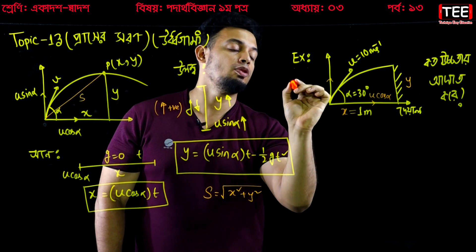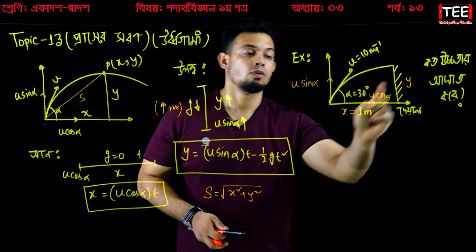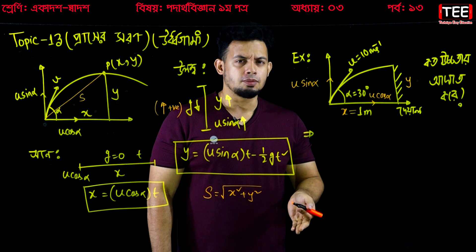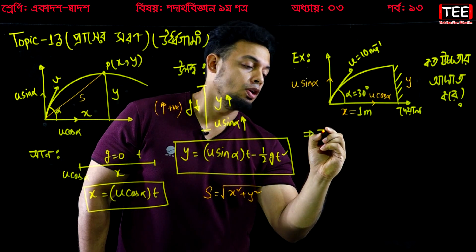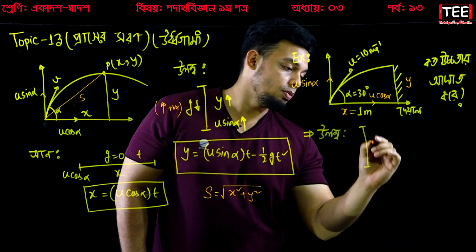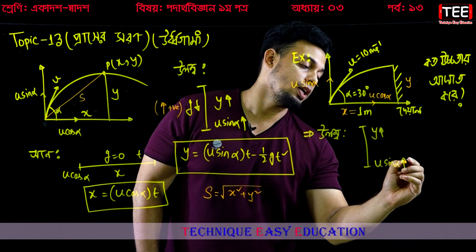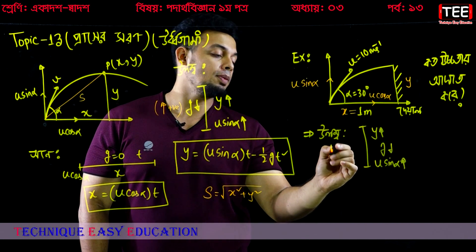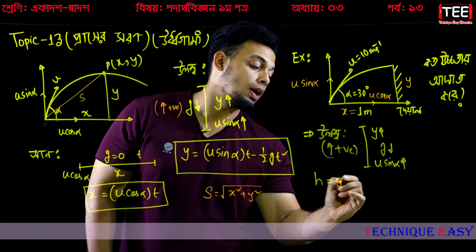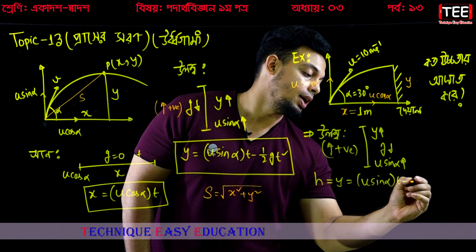The x component is u·cos(α). Now, for the y direction, we use u·cos(α) for the horizontal. So h, or y, equals u·cos(α)·t minus half g·t squared.